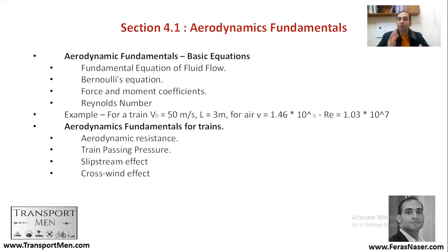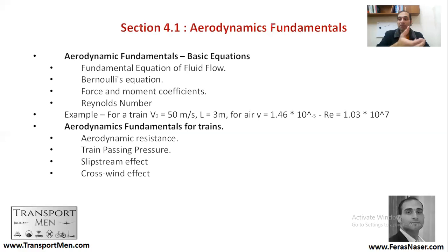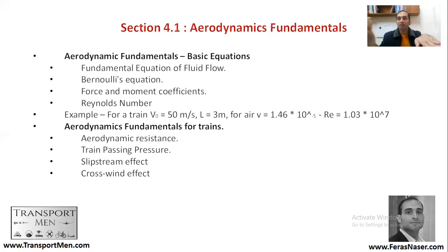Aerodynamic resistance is when a train passes through an air envelope — it has that air resistance that reduces its speed and affects its energy. We need to understand this resistance and design our trains to be aerodynamically friendly. Train passing pressure refers to how the train inside has a different pressure from outside, so the train moves from one pressure to another. The slipstream effect is that tail of wind that happens after the train passes through an air envelope. Crosswind effect is what can happen from wind coming from the lateral side — a train going at high speed with a crosswind that might affect its movement or vehicle dynamics.